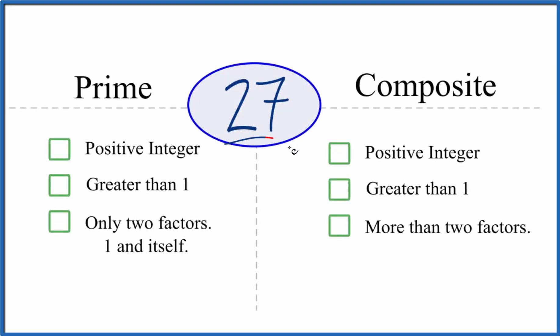If you're asked to determine whether 27 is a prime or a composite number, here's how you do that. So let's look first whether 27 is a prime number.